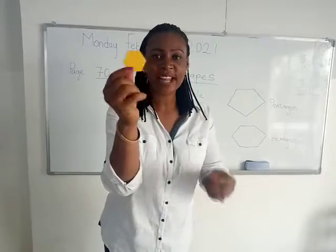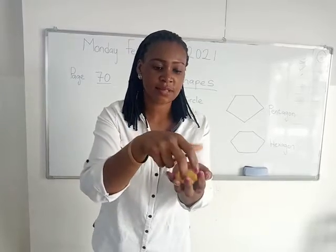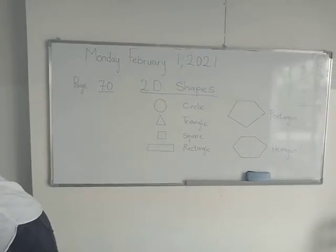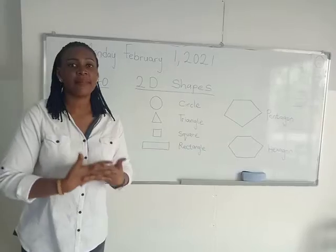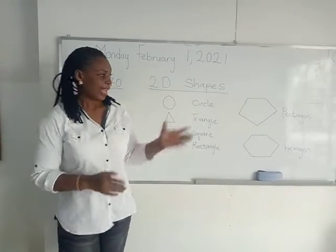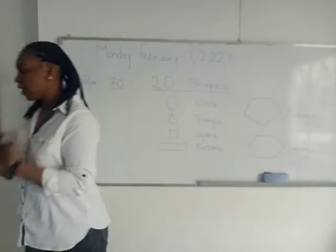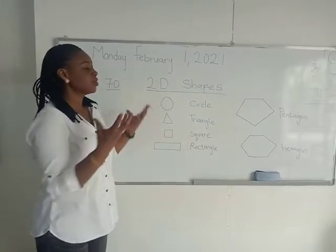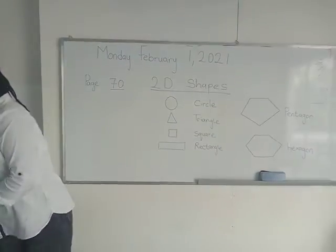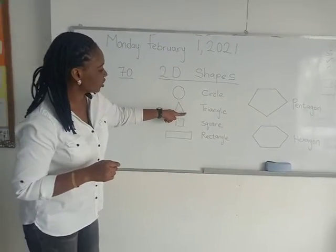Hello guys, what do I have with me here? Today in math we're going to be talking about 2D shapes. On the board we have six different shapes. The first thing we have to do in this lesson is to identify different shapes and describe how they look, and the second thing is to talk about the number of sides each shape has.